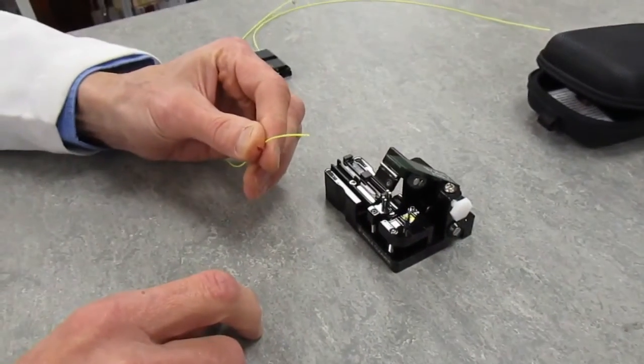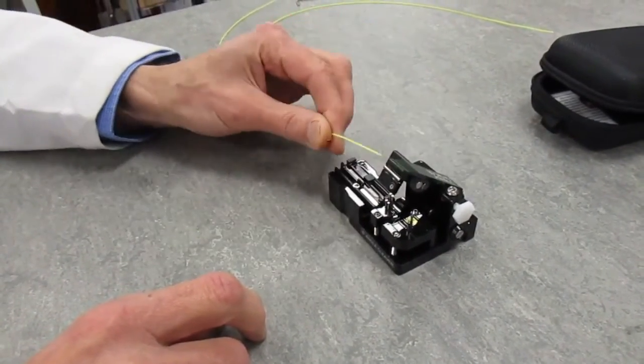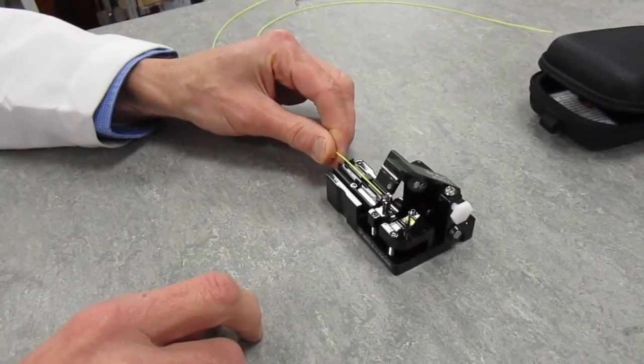And here is the angled cleave. You can see that I put 900 micron coated fiber into the cleaver.